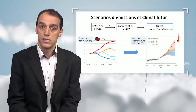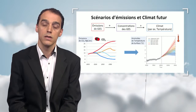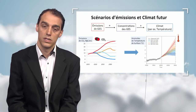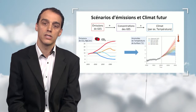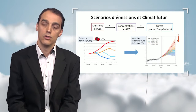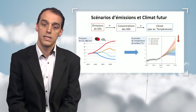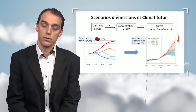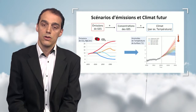The greenhouse effect increase explains the order in which things happen. First, concentrations increase, and then the climate changes increase.